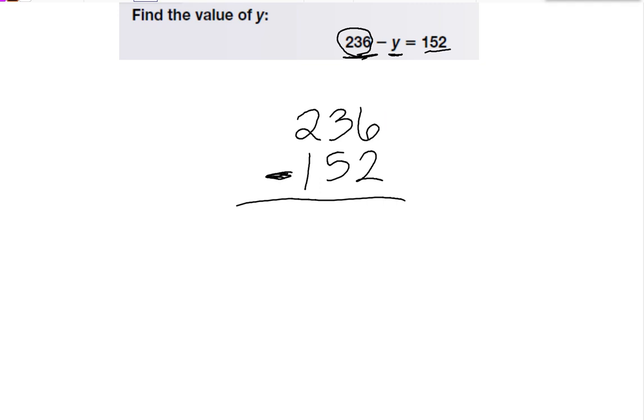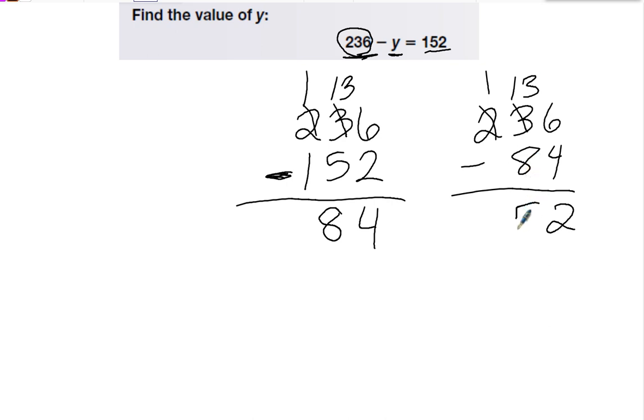So we do 6 minus 2 is 4. Can't take 5 from 3, so we're going to borrow 13. 13 minus 5 is 8. So my answer is 84. And to check, I can do 236 minus 84 and see if I get 152. 6 minus 4 is 2. Borrow. 13 minus 8 is 5, and 1 minus nothing is 1. So my answer is correct. It's going to be 84.